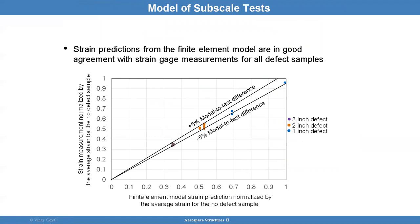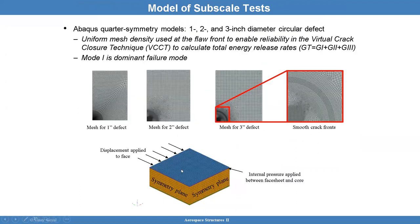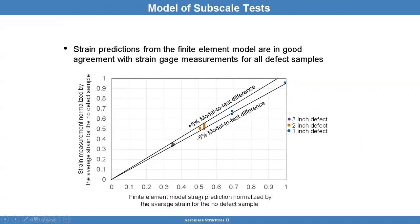You also want to do a strain gauge correlation — put a strain gauge at the top, a strain gauge at the bottom, run a test, and see if it compares well to the model. The model-to-test difference is about 5%, which is pretty good. The defects we're worried about with this failure mode of concern are always between the face sheet and the core.